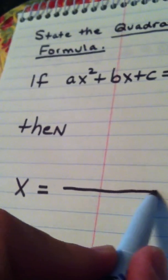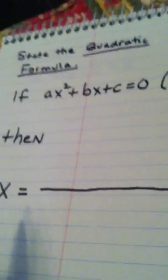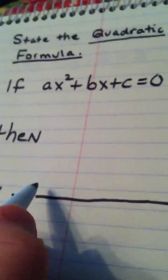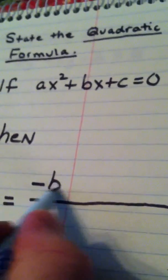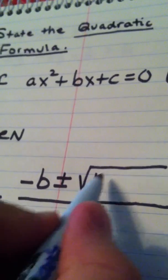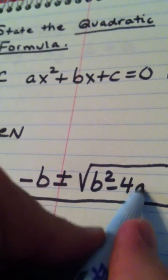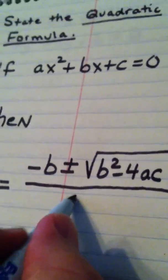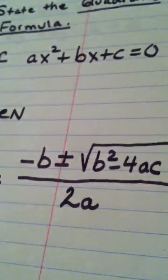We draw the line all the way across. And in the numerator we put opposite of b plus or minus the square root of b squared minus 4ac. And then this is all divided by 2 times a.